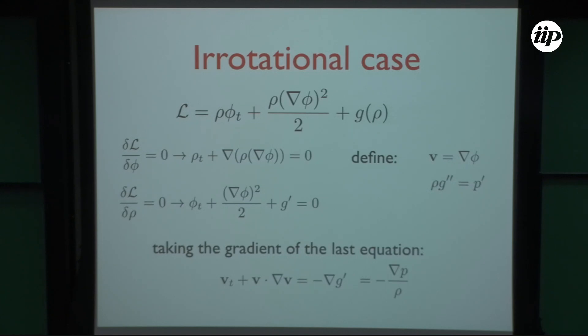This gives you the continuity equation and the Euler equation in the form of a Bernoulli equation. If you take the gradient of the Bernoulli equation, you are back to the Euler equation.